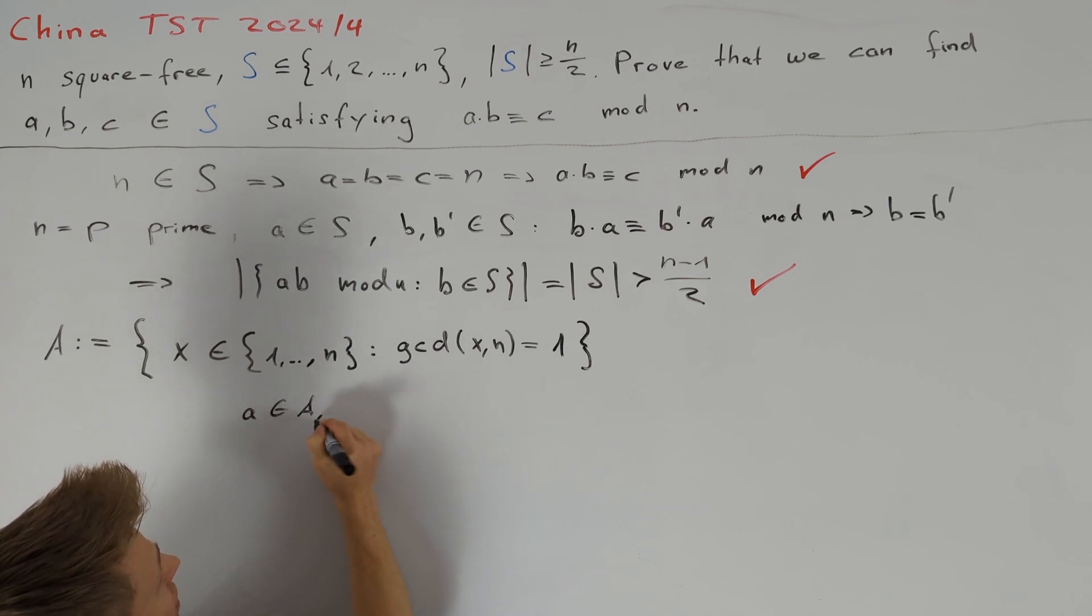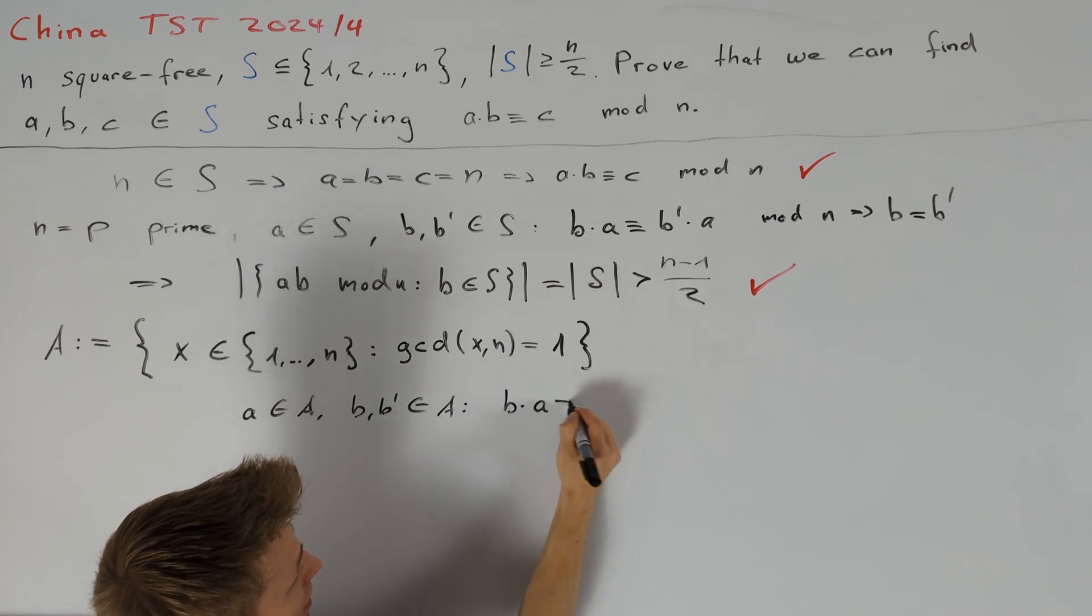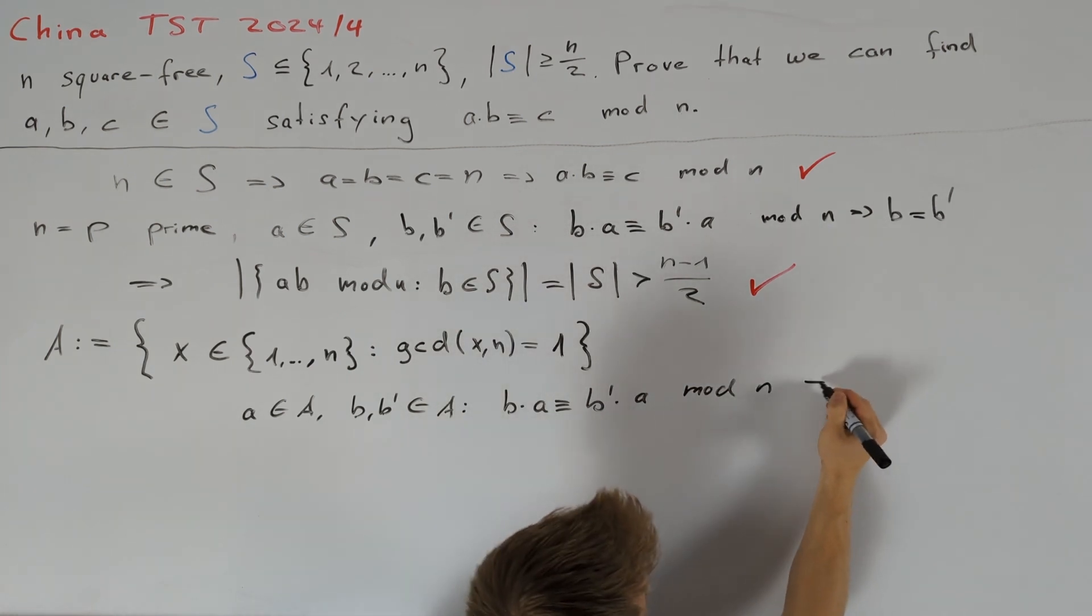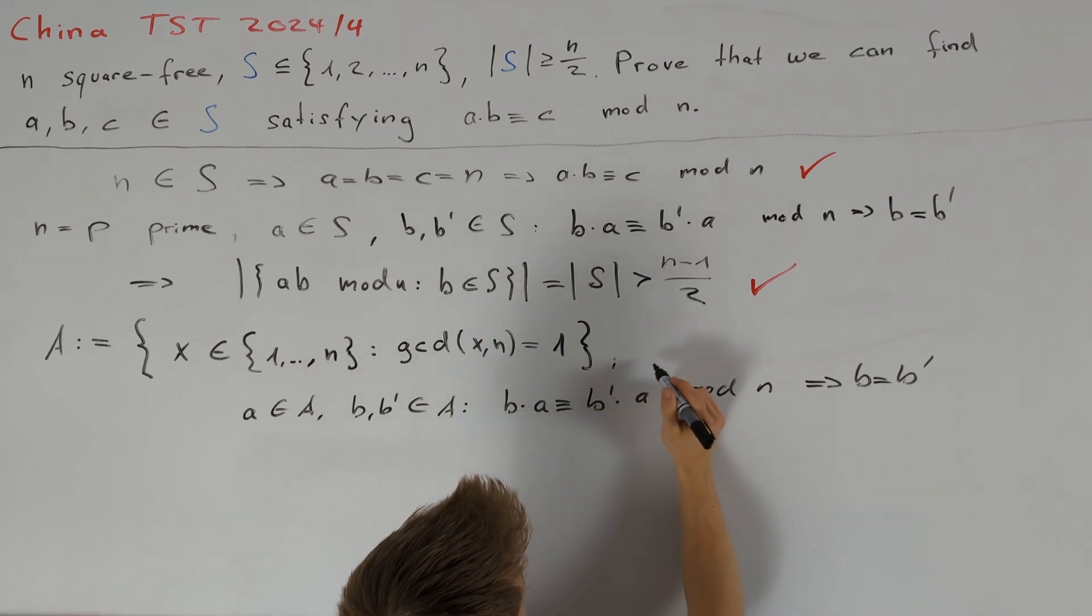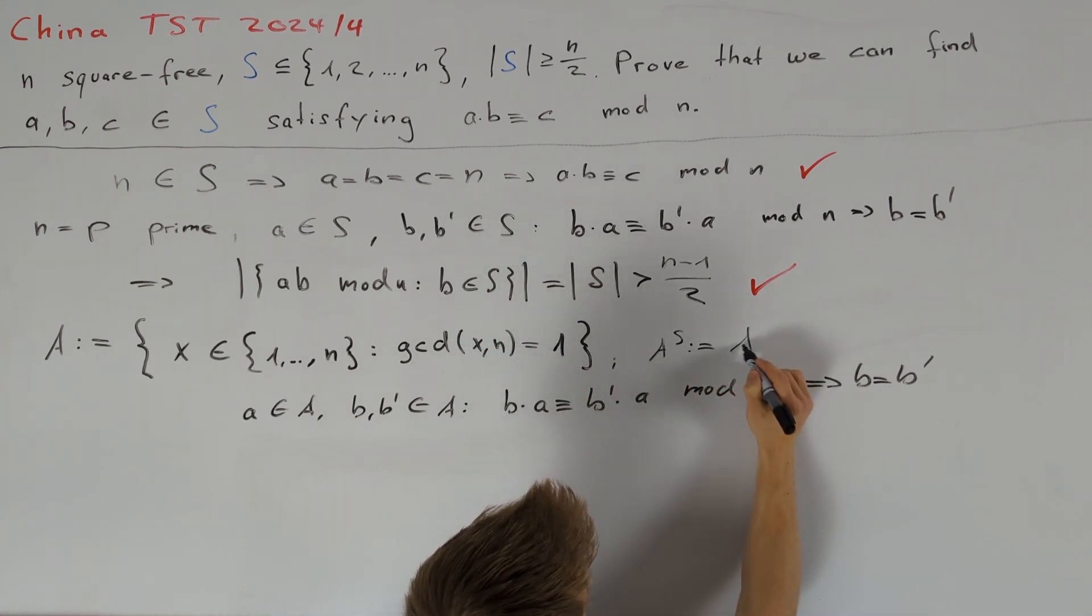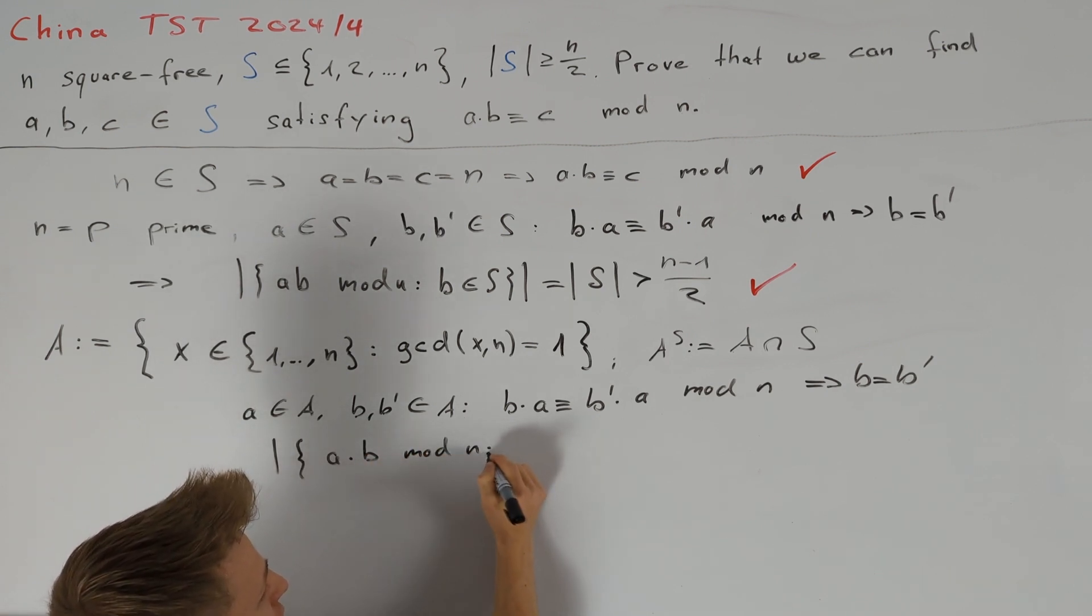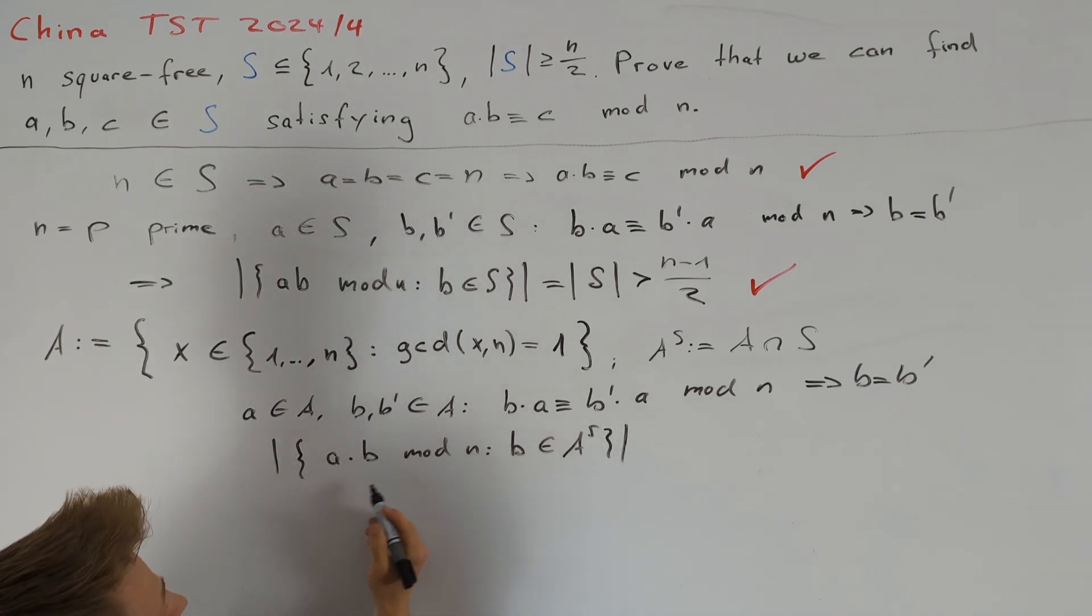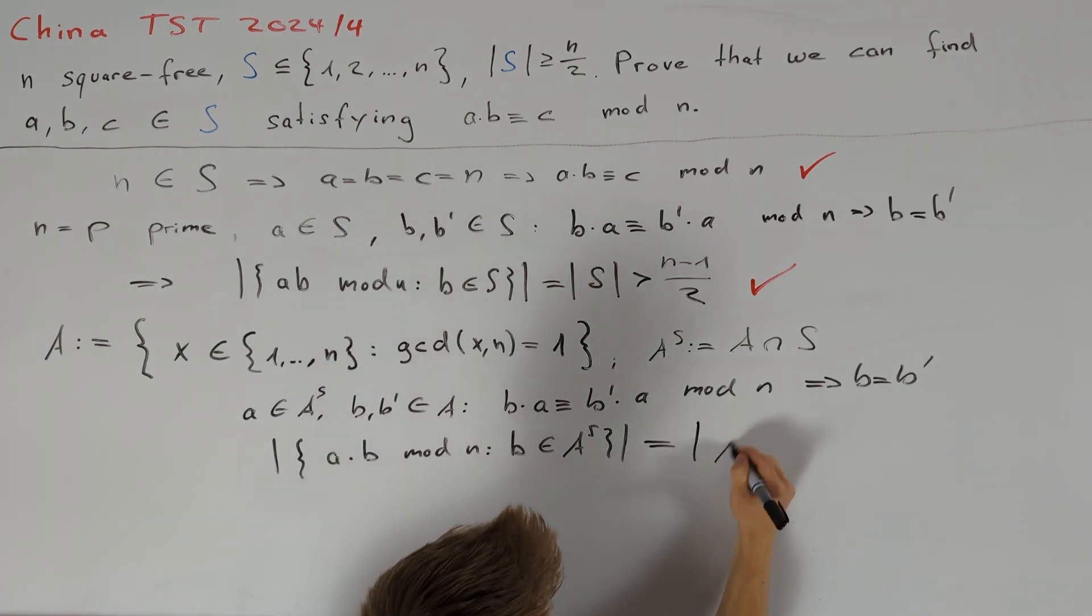Namely, if we have a in A and also b and b prime in A, such that b times a is congruent to b prime times a modulo n, then we can conclude that b is equal to b prime. Of course, we are interested in the set S. Therefore, we want to define A_S to be equal to A intersected with S. Let's again take a look at a set of residue classes of a times b modulo n, where we want b in A_S and a should be a fixed value in A_S.